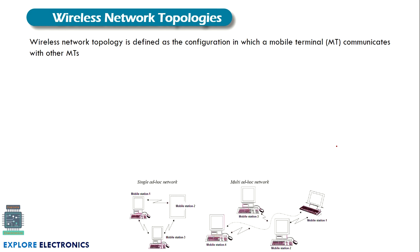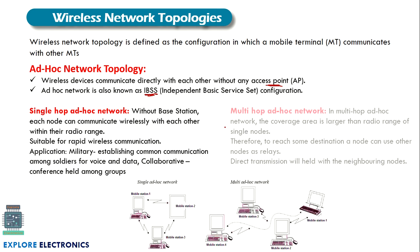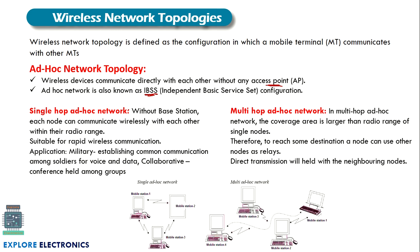Now, wireless network topologies. A wireless network topology is defined as the configuration in which mobile terminals or mobile stations communicate with other mobile stations. There are two types: ad hoc network topology and infrastructure network topology. In the ad hoc network topology, wireless devices communicate directly with each other without any access point. This is also known as IBSS — Independent Basic Service Set. There are two types of ad hoc network: single-hop and multi-hop. In a single-hop ad hoc network, without a base station, each node communicates wirelessly within a radio range, suitable for rapid wireless communications such as military use among soldiers.